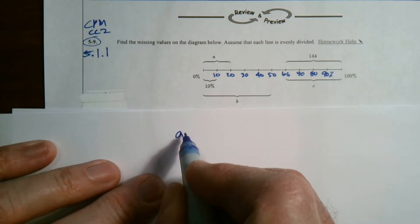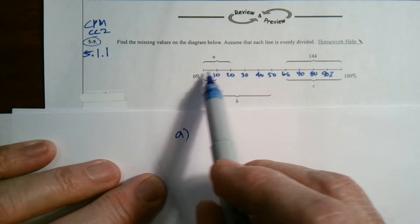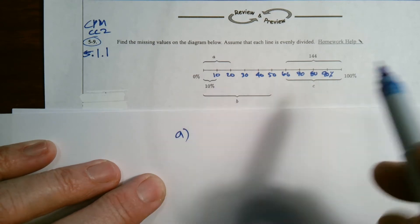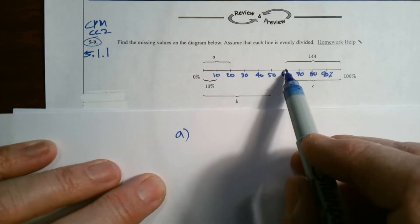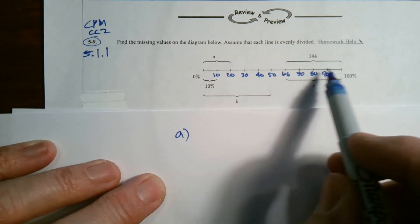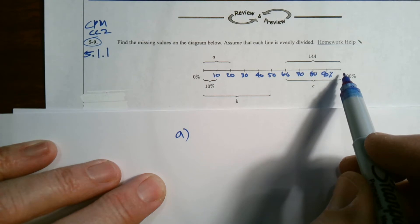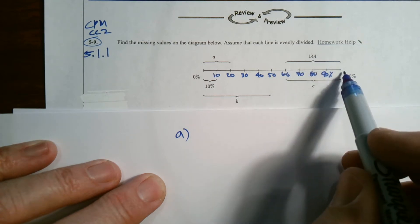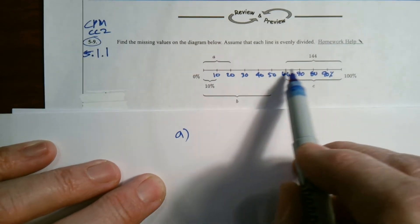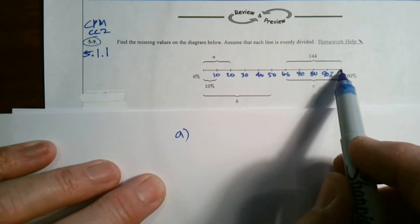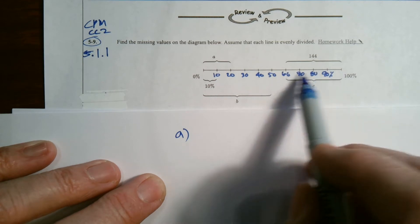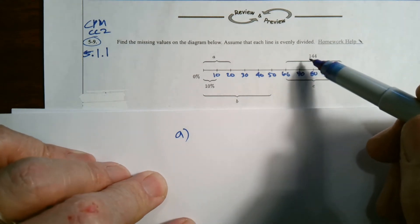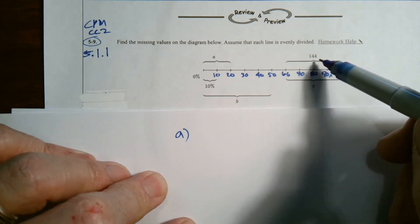So A, we'll start there. A is at 20 percent. 20 percent of what? How do I determine? Well, they did give us already one quantity. They told us from 60 to 100 percent is 144. So from here to here is 144. Well what is that percentage? Well that right there is 40 percent. From 60 to 100 percent is 40 percent. So could I determine how much is 10 percent based on this information? Or how much is 20 percent?